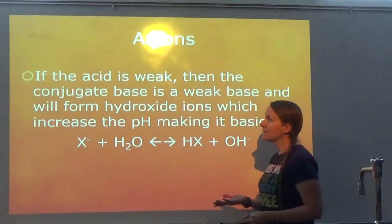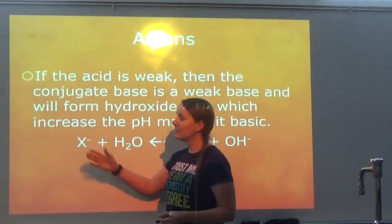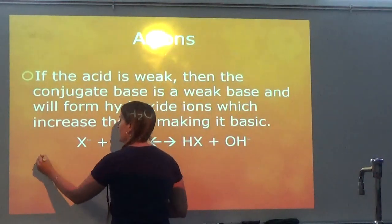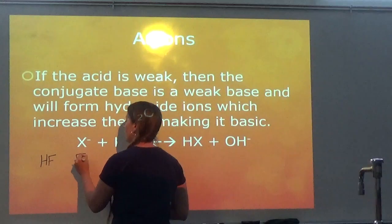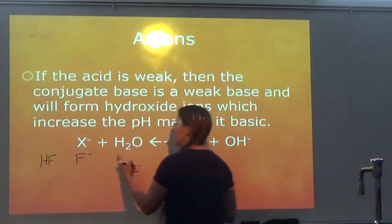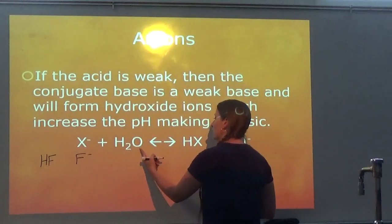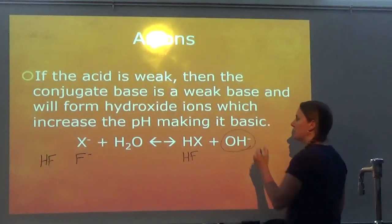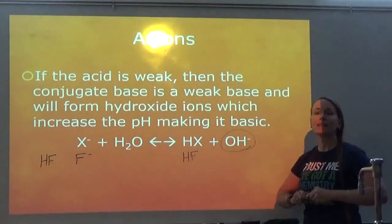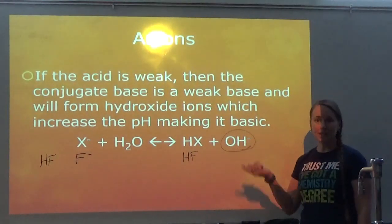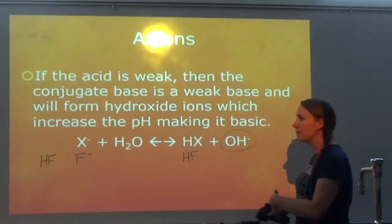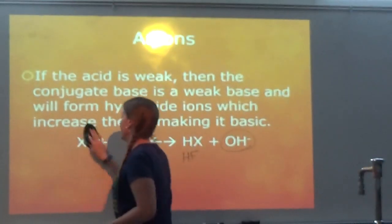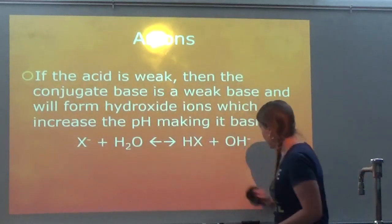If you have the conjugate base of a weak acid — for example, HF is a weak acid, so if you have F⁻ floating around — it's going to react with water to form HF and OH⁻. That's where you get a pH higher than 7, and we would say that solution is going to be basic because the pH is increasing.